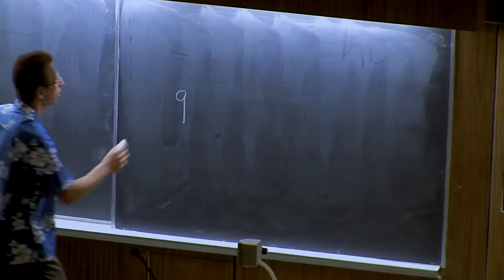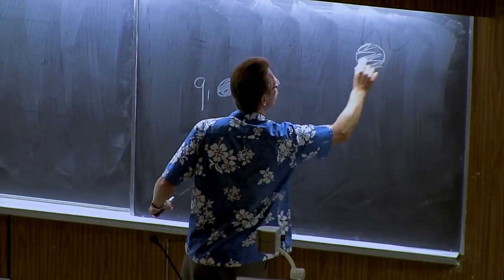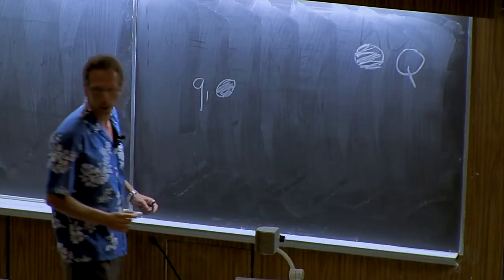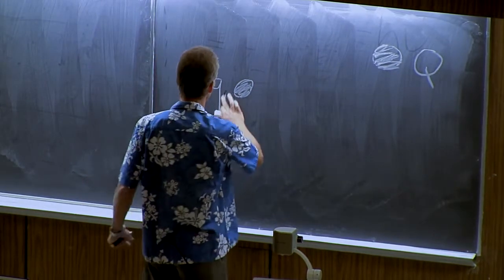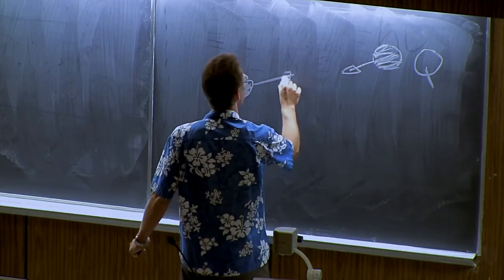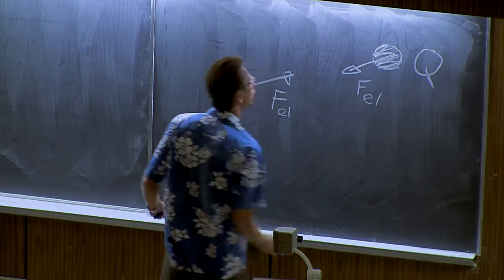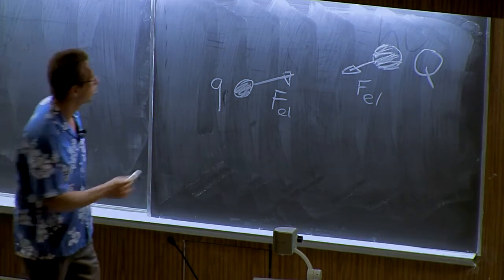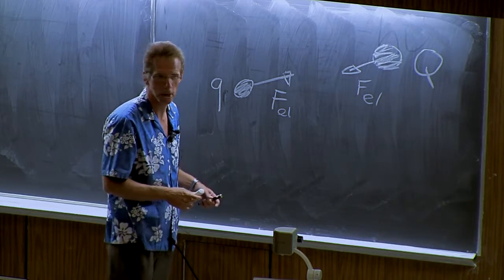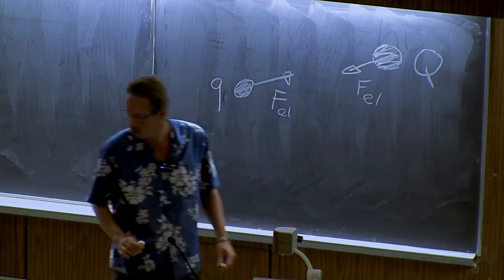We have the observation that there are things like electrical charges. Here we have one charge and here we have another charge. The observation is that there is a force interacting between those two charges — they can attract or repel each other. This interaction happens even when the two charges are quite a distance apart, which seemed rather mysterious to physicists.